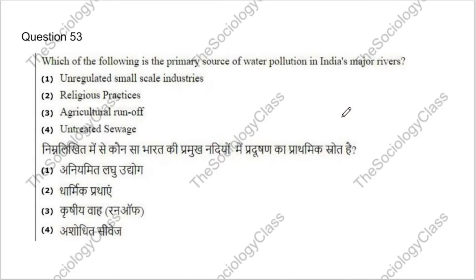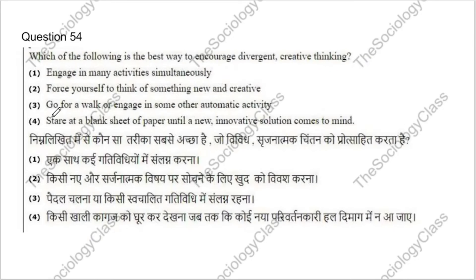Question 53: Which of the following is the primary source of water pollution in India's major rivers? Options: unregulated small-scale industries, religious practices, agricultural runoff, or untreated sewage. The correct answer is D — untreated sewage.